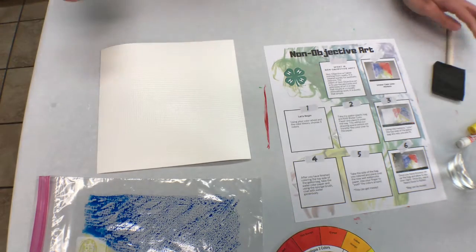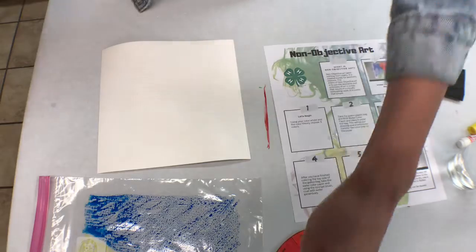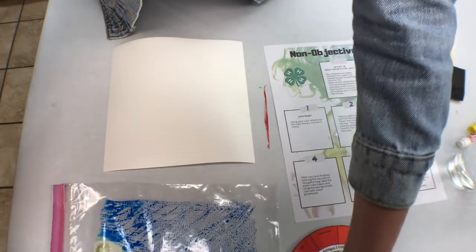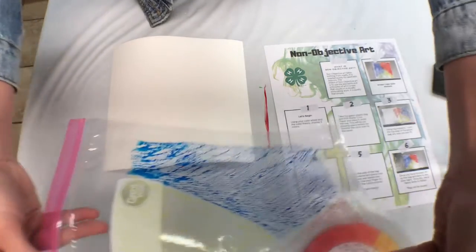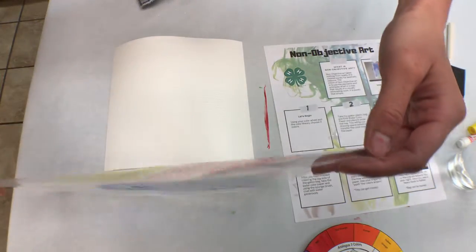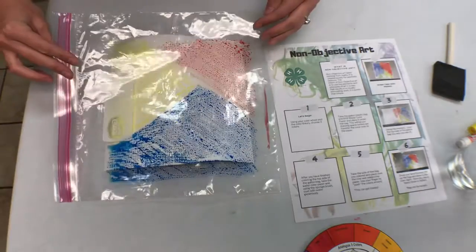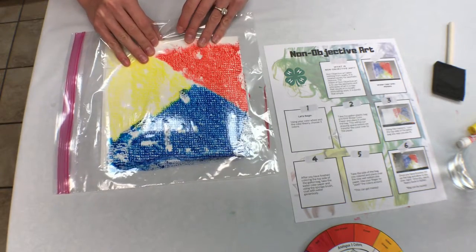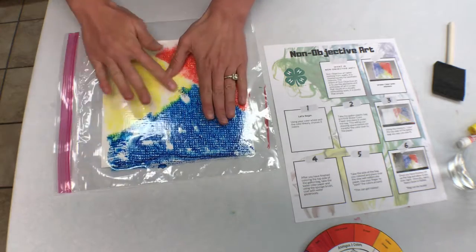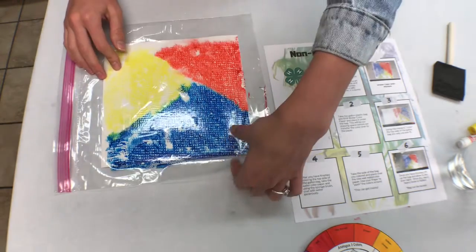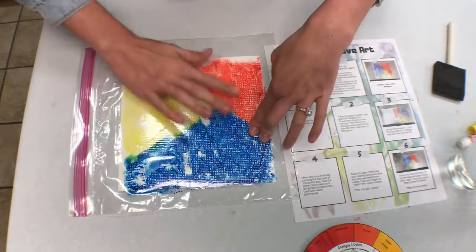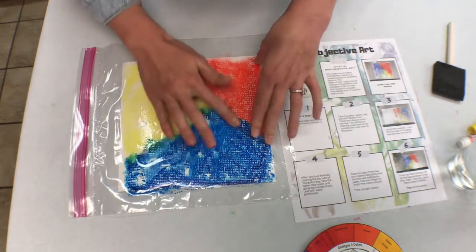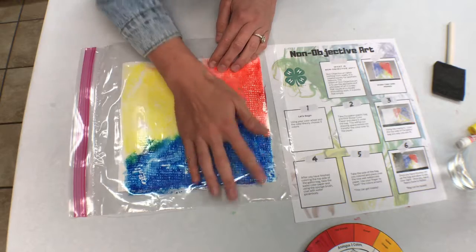All right, so now you're going to flip your gallon-sized baggie with your colors on it on top of your watercolor paper. Remember, you're going to see immediately that the color starts to stick to it. And then you can start blending or shading with your fingers these colors.